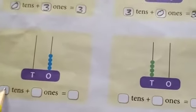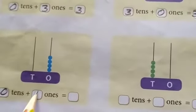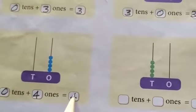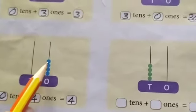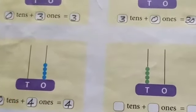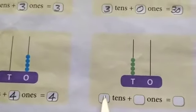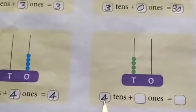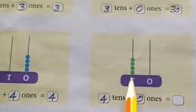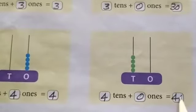Here, zero tens and four ones — four ones is equal to four. Here, four tens and zero ones. Four tens means forty.